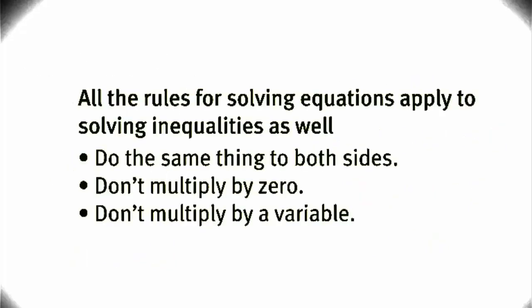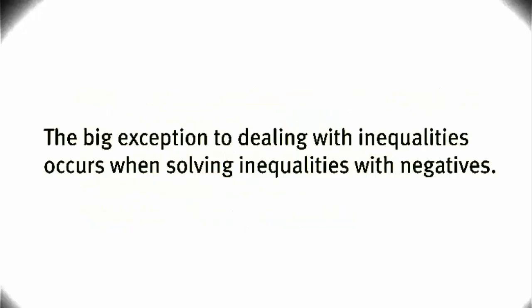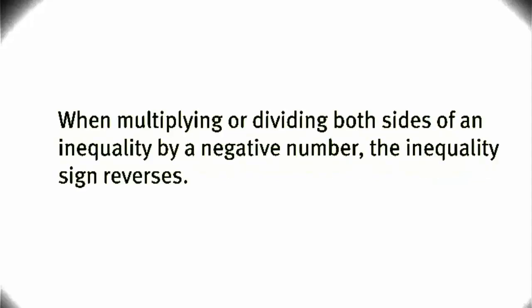All the rules for solving equations apply to solving inequalities as well. Do the same thing to both sides, don't multiply by 0, and don't multiply by a variable. The big exception to dealing with inequalities occurs when solving inequalities with negatives. When multiplying or dividing both sides of an inequality by a negative number, the inequality sign reverses.